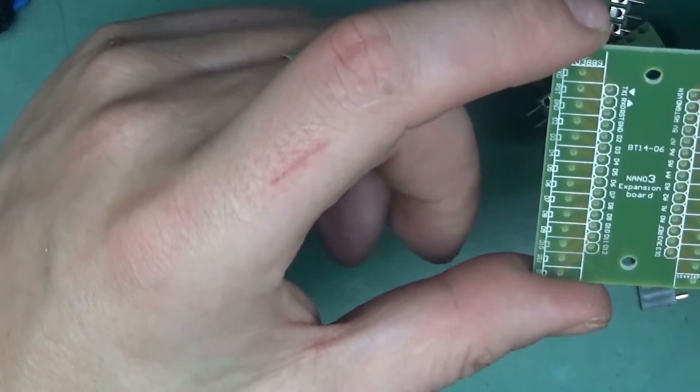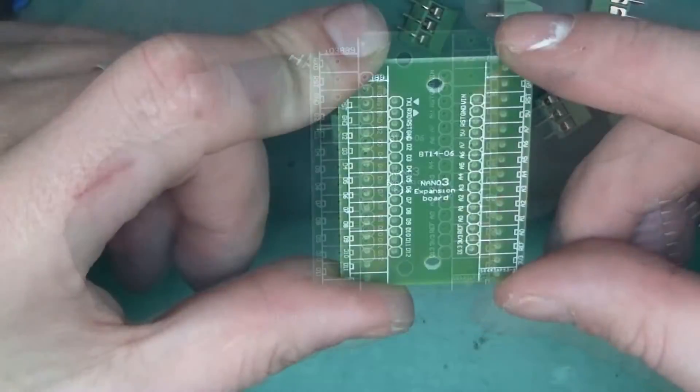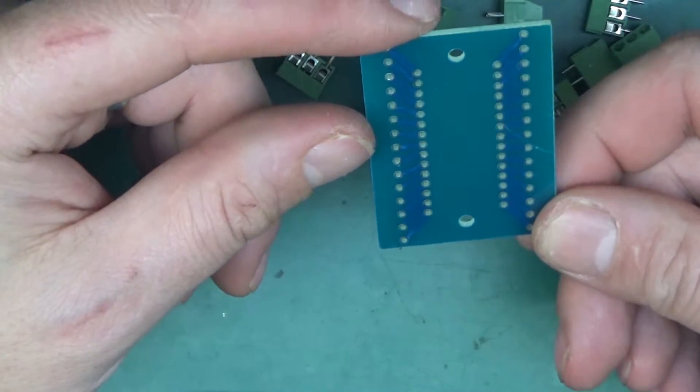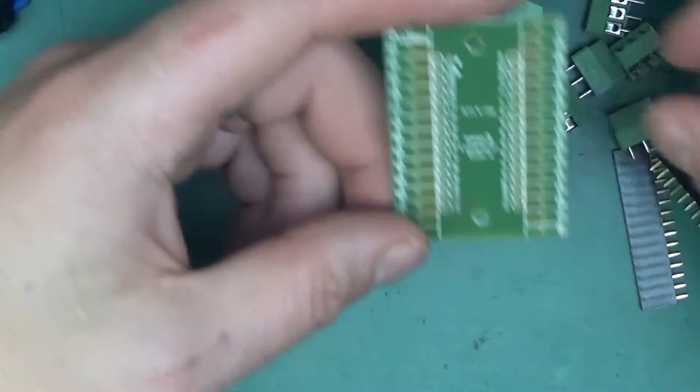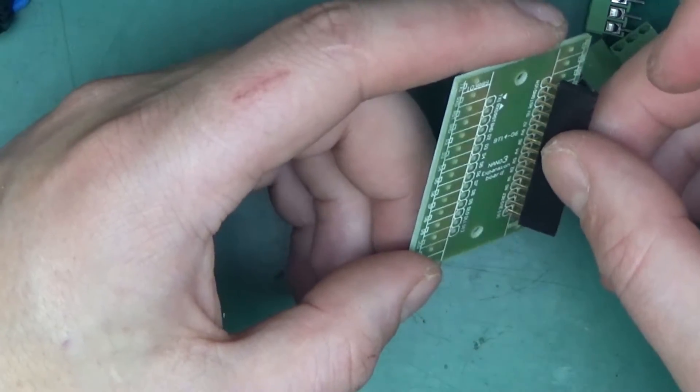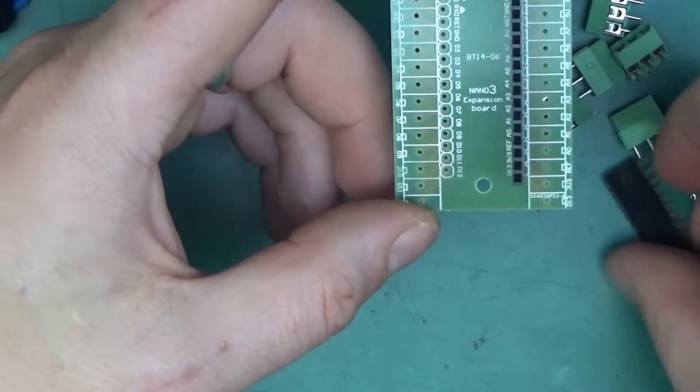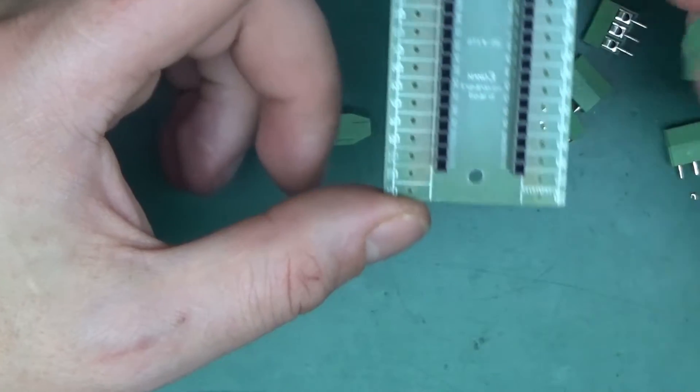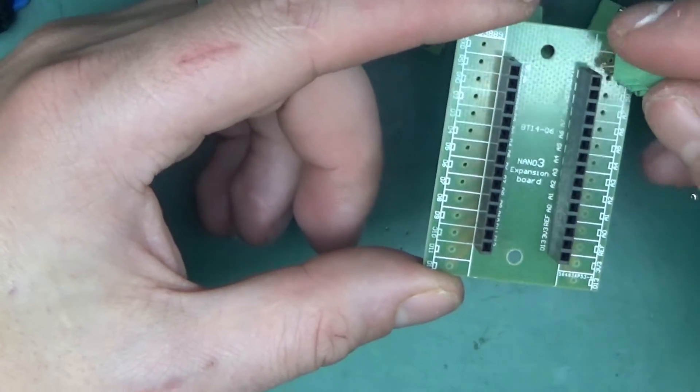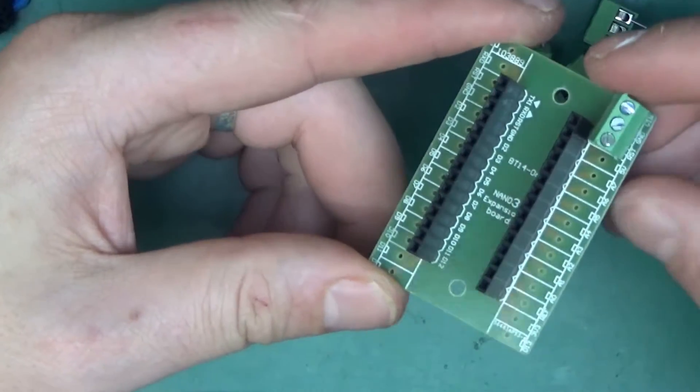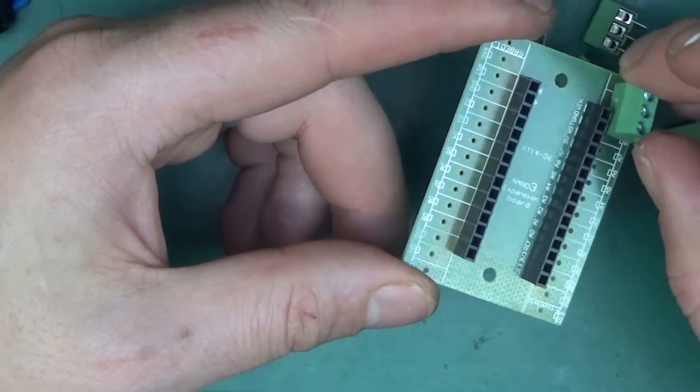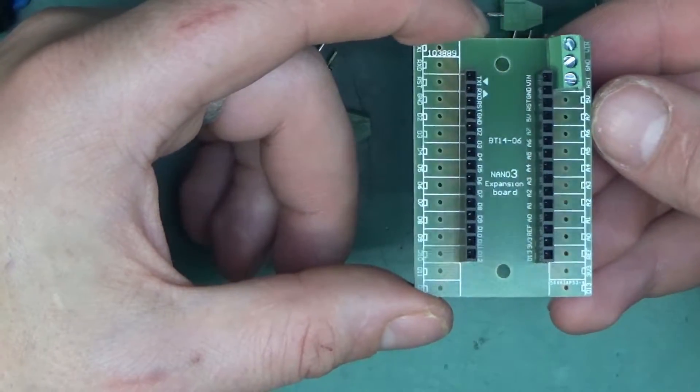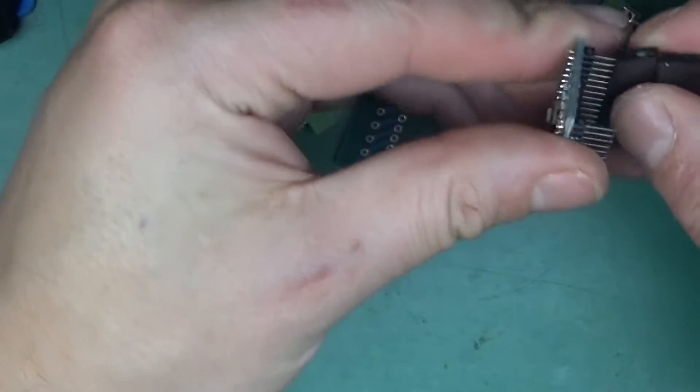Now let's have a look at the first adapter thing. Nano 3 Expansion Board BT14-06, very simple PCB, nothing special on it. But basically what's meant to happen, the female headers are meant to go in like so to accept a Nano, and then all those screw terminals are supposed to go all the way around like so. And then you can connect all sorts of wires to a Nano to make it nice and neat.